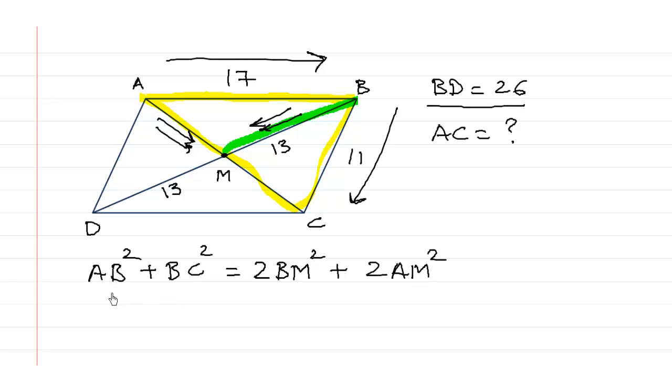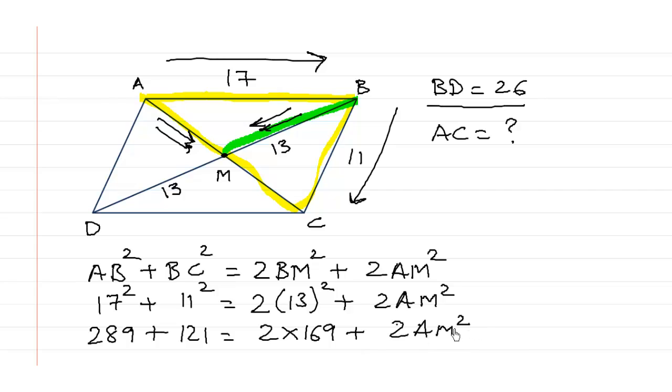So let us substitute AB square is 17 square, BC square is 11 square is equal to 2 times 13 square plus 2 times AM square. So 17 square is 289 plus 121 is equal to 2 into 169 plus 2 AM square.